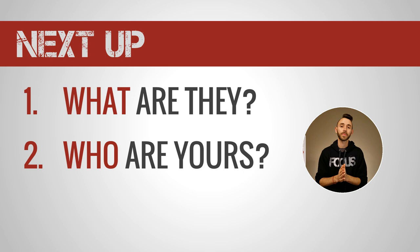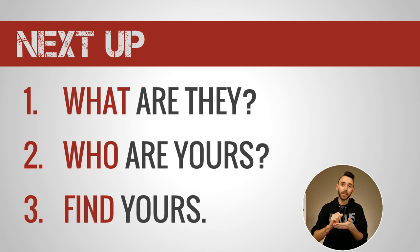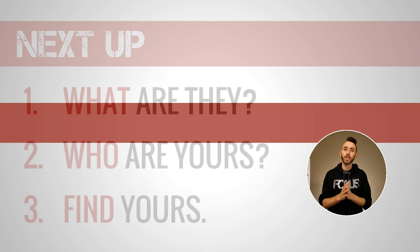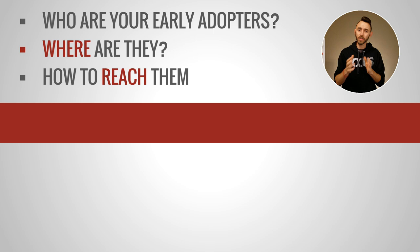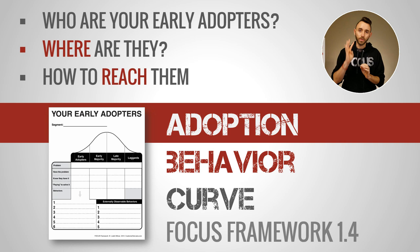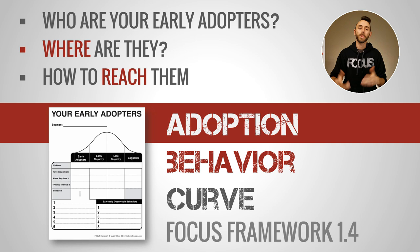To do that, write down what actions your early adopters would take to try and solve the problem, and then reach out to them. If you want help with this — including more detailed steps on describing exactly who your early adopters are, identifying where they are, and how to reach out to them — check out the Adoption Behavior Curve. It's the fourth exercise in the first workbook of the Focus Framework, and it will help you detail exactly who your early adopters are, where they are, and how to reach out to them.